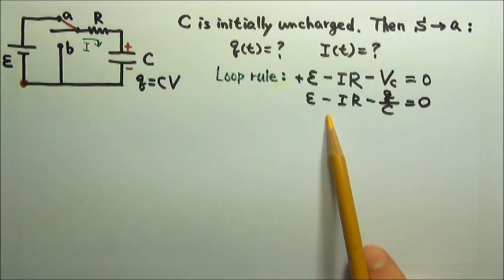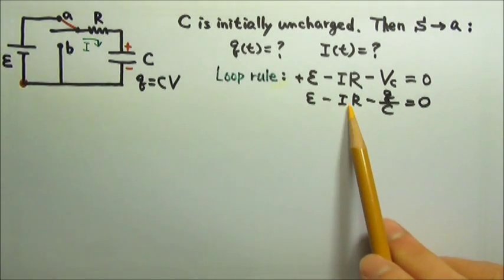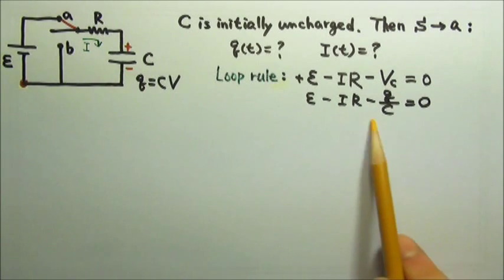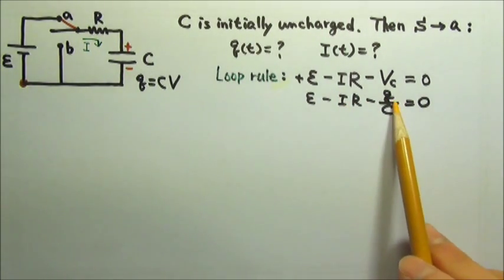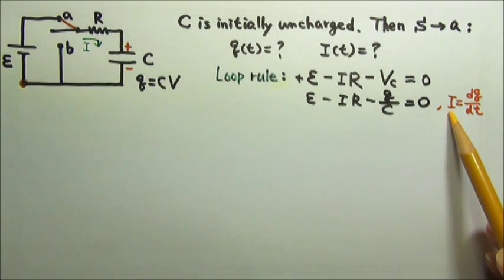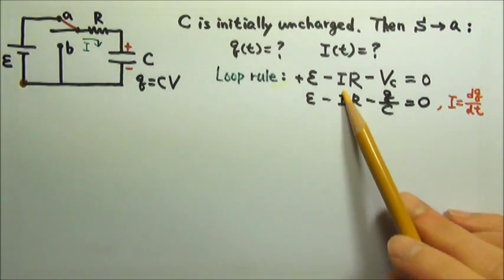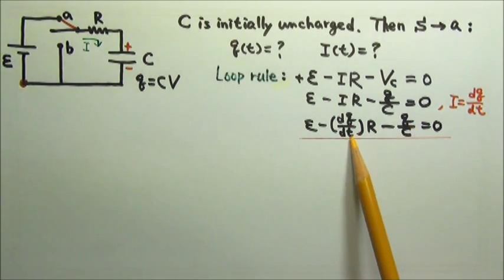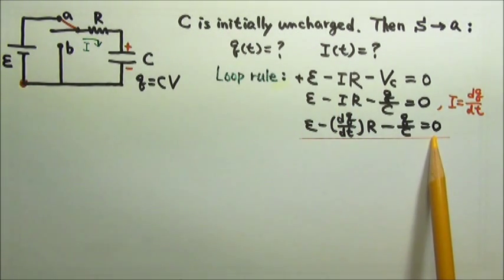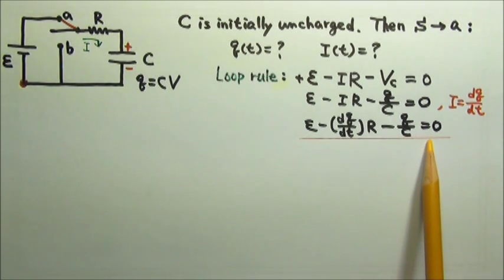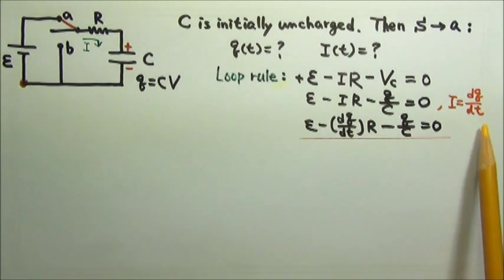We would like to have one equation with one unknown so we can solve for it. That means we should rewrite I or Q in terms of the other. We know that by definition the current is the charge flow per unit time, dQ/dt. So we can replace I with that, giving us one equation with one unknown. This equation has a derivative in it, so this is what we call a differential equation. You would start with the loop rule and substitute I with dQ/dt to get it.